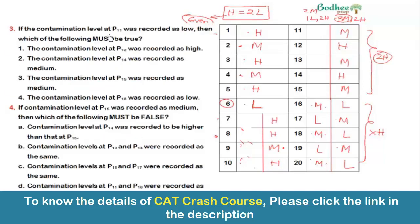Question 3: if the contamination level at P11 was recorded as low, which of the following is true? With P11 = L, since P12 cannot be L and must differ from P10 (which is H), P12 must be M. We then need two H and two M in the remaining positions P12 to P15, with no two consecutive same values.